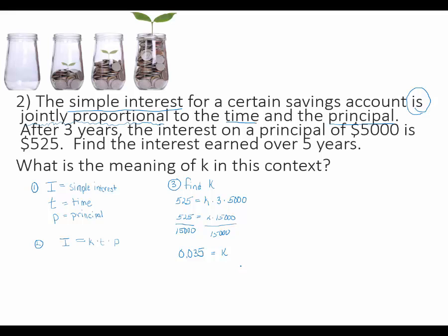So now I know K, ready to go on and answer the question. So step 4 of a variation problem is to solve the question. So looking at my problem, very last sentence here, find the interest earned over 5 years.